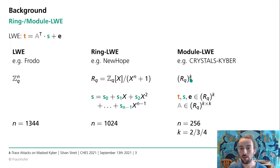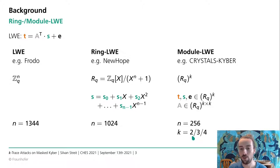Kyber adds another level on top of these polynomial rings as a generalized vector field, also called a module. This module is of degree K: K is 2, 3, or 4 depending on the different security levels. K is 2 for Kyber-512, K is 3 for Kyber-768, and K is 4 for Kyber-1024.